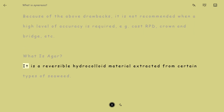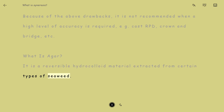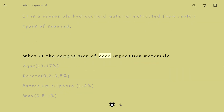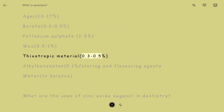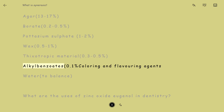What is Agar? It is a reversible hydrocolloid material extracted from certain types of seaweed. Composition of Agar impression material: Agar – 13–17%; Borate – 0.2–0.5%; Potassium sulfate – 1–2%; Wax – 0.5–1%; Thixotropic material – 0.3–0.5%; Alkyl benzoates – 0.1%; Coloring and flavoring agents; Water to balance.